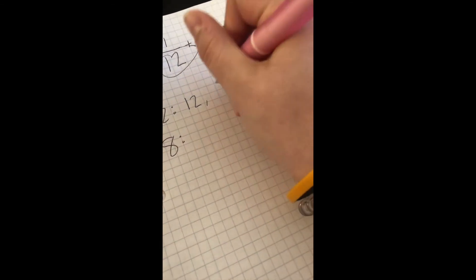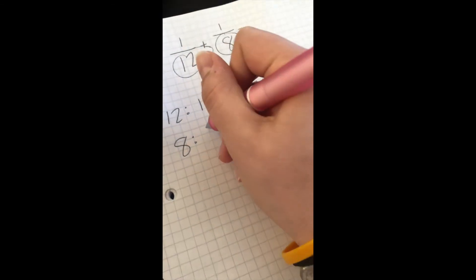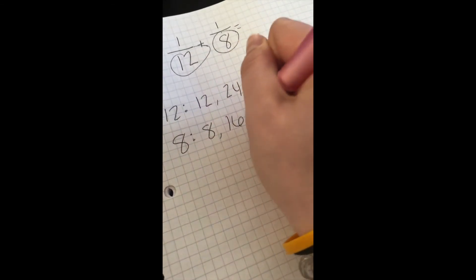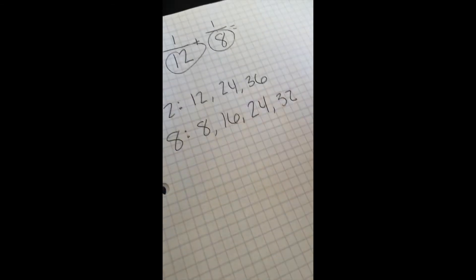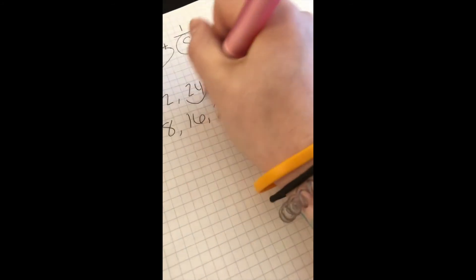I do 12, 24, 36. And then for 8, I would do 8, 16, 24, 32. And then when I look, the smallest one they have in common this time is 24.